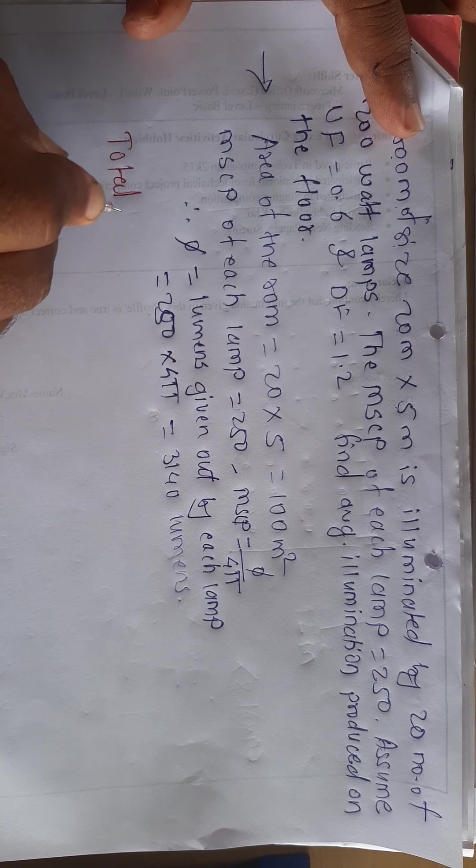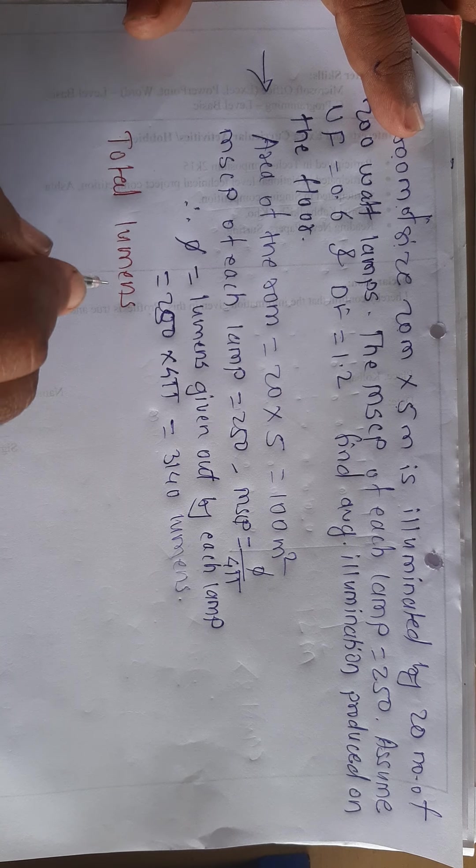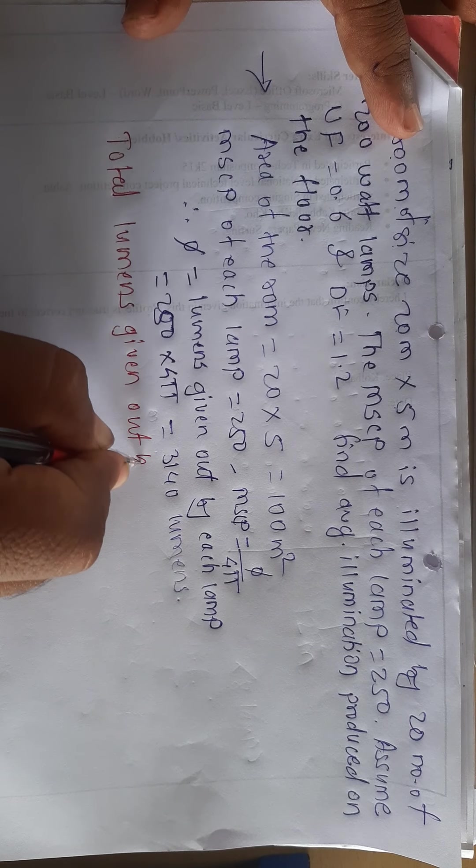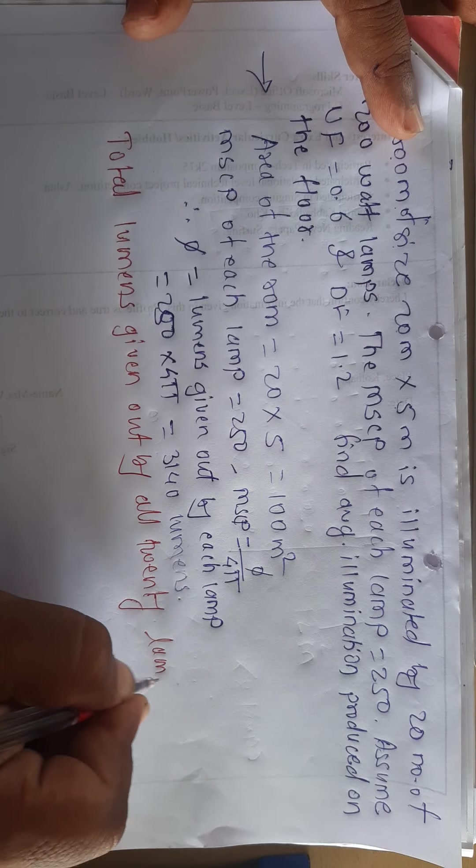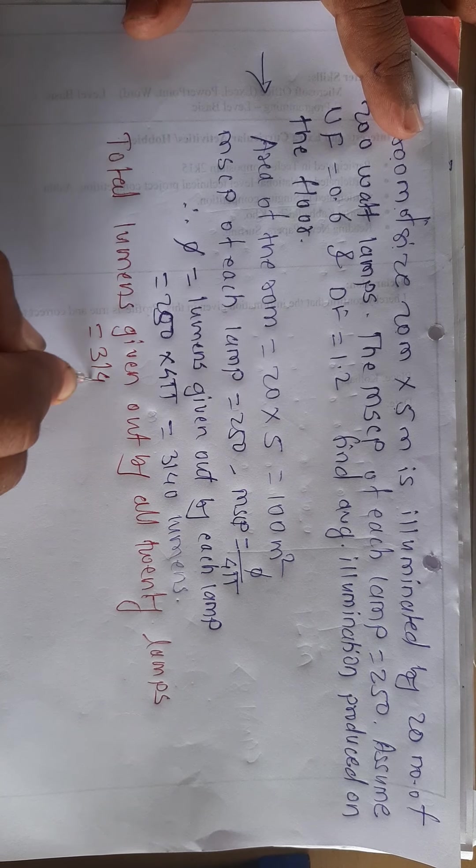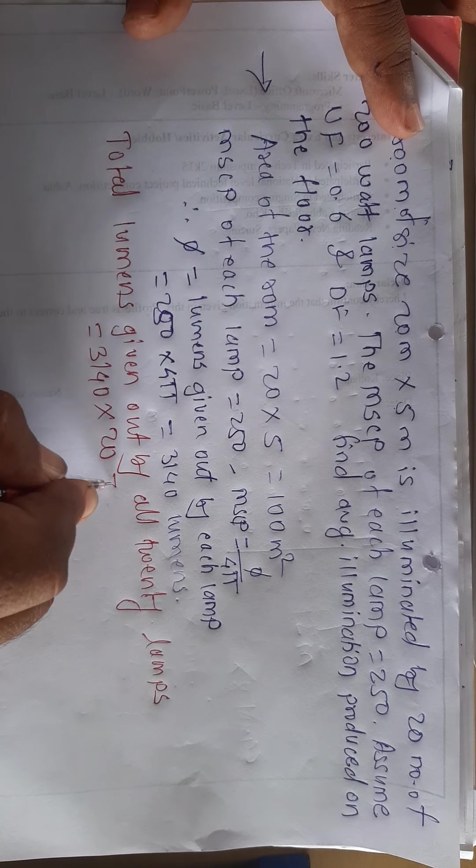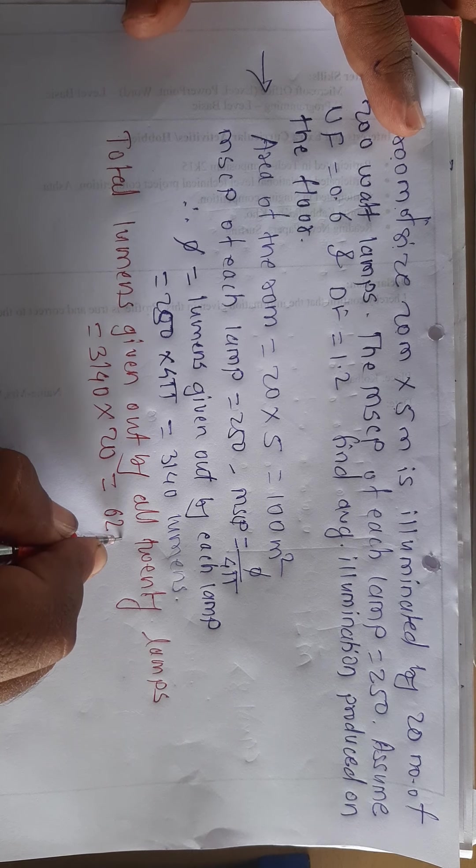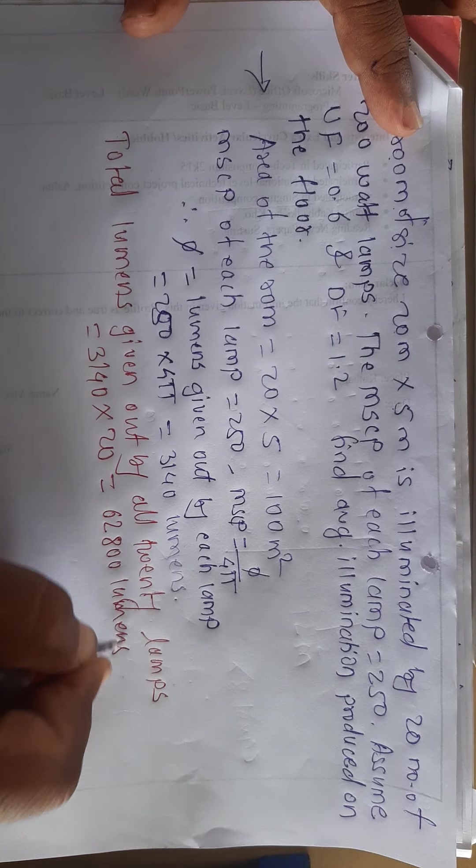Total lumens given out by all 20 lamps which is 3140 into 20, equals 62,800 lumens.